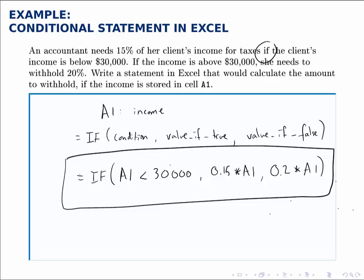Notice the structure: we type equals to access the function IF, and then in parentheses we put three pieces. One is the condition, then what should be placed in the cell if that condition is true, and then finally what should be placed in the cell if that condition is false.